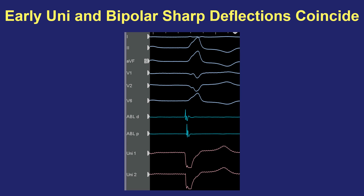This is the holy grail when looking for a focal site of origin: a sharp bipolar signal that's as early as anywhere you've recorded, a very sharp descent on the uni-1 electrode at exactly the same time, and no far-field signals on any of the channels suggesting earlier activation elsewhere. This was in fact the successful ablation site for this PVC, confirmed by combining bipolar and unipolar recording channel information so that ablation succeeded with the very first RF lesion.